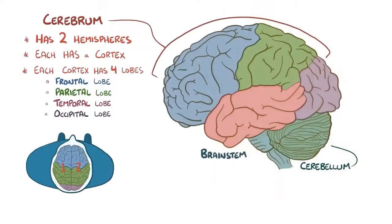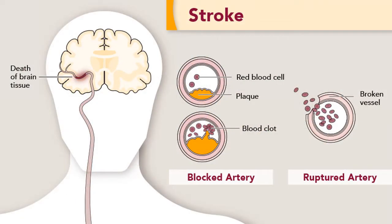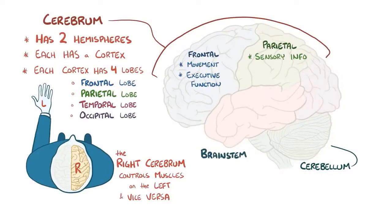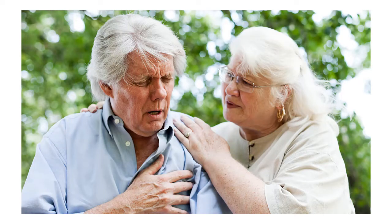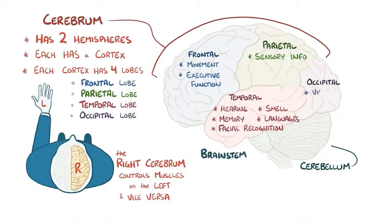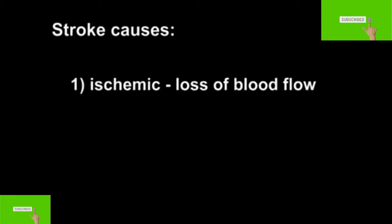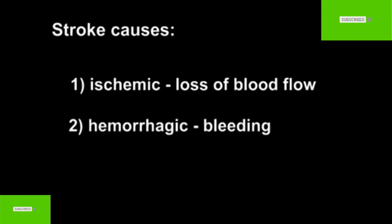There are a number of additional structures, including the cerebellum, which is down below, as well as the brainstem which connects to the spinal cord. The right hemisphere controls muscles on the left side of your body, and vice versa. The frontal lobe controls movement and executive function — our ability to make decisions. The parietal lobe processes sensory information, letting us locate exactly where we are, and guides movements in three-dimensional space. The temporal lobe plays a role in hearing, smell, and memory, as well as visual recognition of faces and language. The occipital lobe is primarily responsible for vision. The cerebellum helps with muscle coordination and balance. The brainstem plays a vital role in functions like heart rate, breathing, gastrointestinal function, and consciousness.